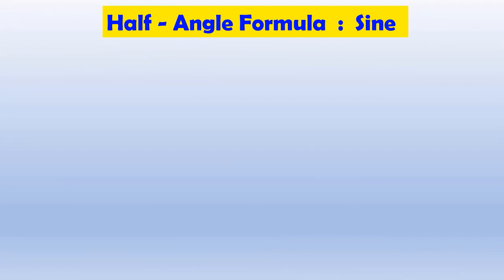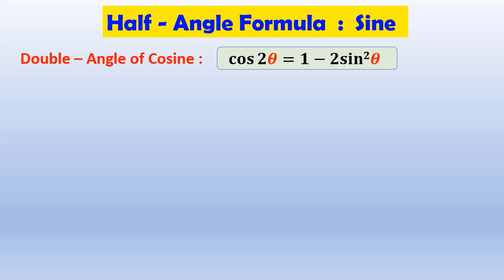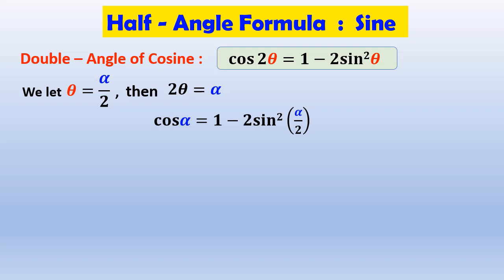To derive the half-angle formulas for sine, we start with the formulas for the cosine of a double-angle that we met in the last sections. If we let theta equal alpha over 2, then 2 theta equals alpha, and our formula becomes cosine of alpha equal to 1 minus 2 sine squared of alpha over 2.